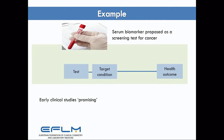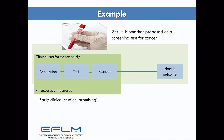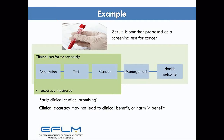My demonstration example of the problem is a serum biomarker proposed as a screening test. In this example, I'm thinking that there are early clinical studies or a discovery study showing promising evidence that the test is associated with cancer. The next step is a clinical performance study in the intended population to provide some accuracy measures. The issue is that, by itself, that information is not necessarily going to improve health outcomes — the cancer outcomes for the patient.